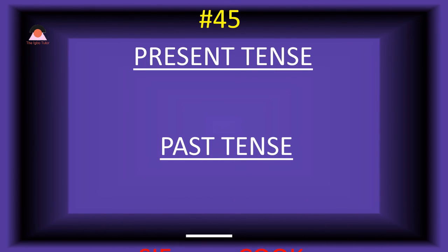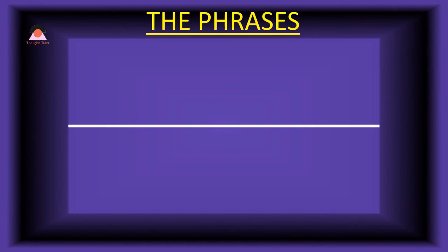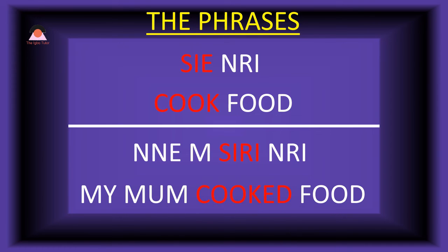Word number forty-five: 'siye,' meaning 'cook.' The past tense of siye is 'siri,' meaning 'cooked.' Present tense phrase: 'siye n'ri' — cook food. Past tense: 'nnem siri n'ri' — my mom cooked food.